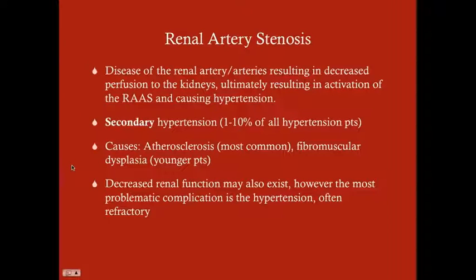The causes of renal artery stenosis are primarily atherosclerosis, which we would suspect in an older patient with a history of MI, angina, stroke, or claudication. Younger patients can get renal artery stenosis too — and in young patients with hypertension, RAS is a big consideration. Younger patients who get renal artery stenosis usually have the disease process known as fibromuscular dysplasia, which is the more common cause of RAS in that population.